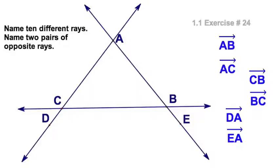As far as opposite rays, well, we clearly have CD, which is opposite of CA. So that's one pair of opposite rays, and the other obvious pair: BA is opposite BE. There you go.